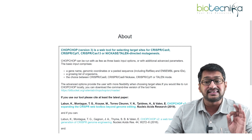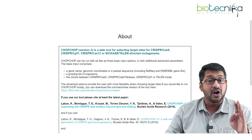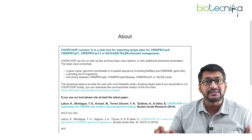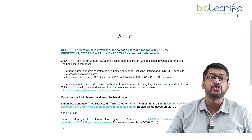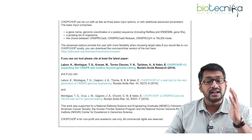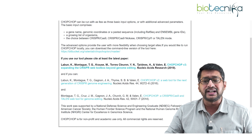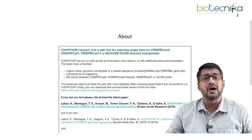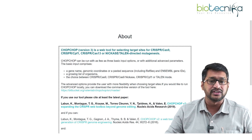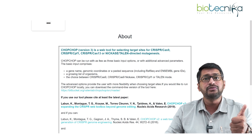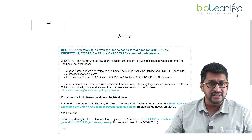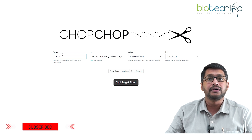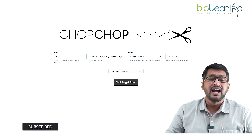CHOP CHOP is currently version 3 and is a web-based tool helpful for selecting target sites for CRISPR-Cas9 technology, as well as various other CRISPR variants. The details are published in Nucleic Acids Research by the tool's designers. Now, since I've decided to use BCL2, I'll type it into the target field in CHOP CHOP.